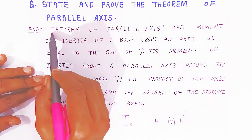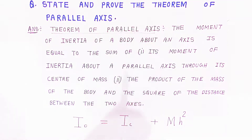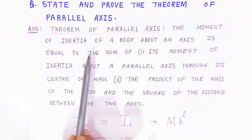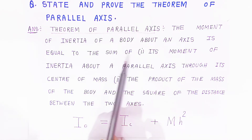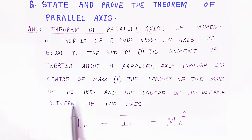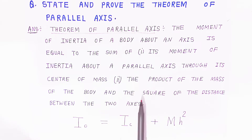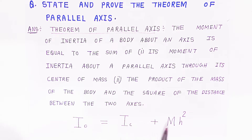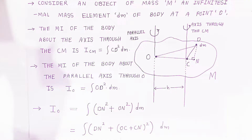What is the theorem of parallel axis? The moment of inertia of a body about an axis is equal to the sum of its moment of inertia about a parallel axis through its center of mass, that is IC, and the product of the mass of the body and the square of the distance between the two axes. The distance is H, so IO equals IC plus MH squared. This is the theorem of parallel axis and this is the mathematical expression.